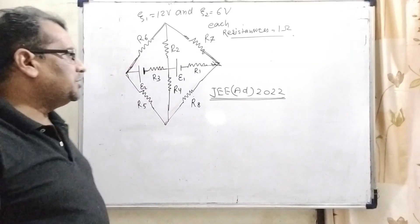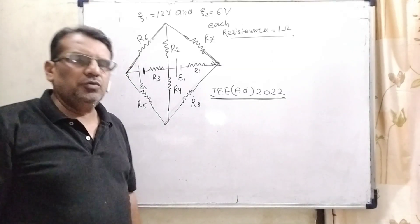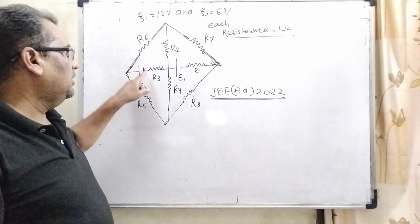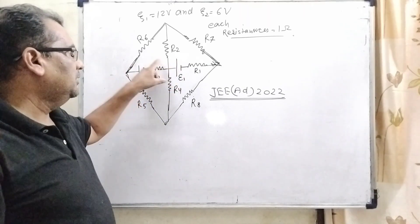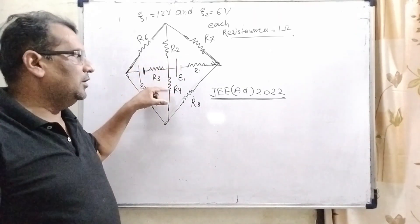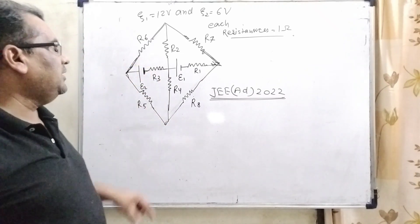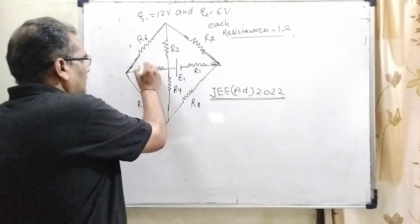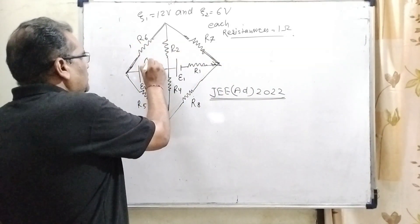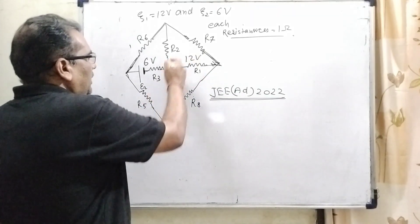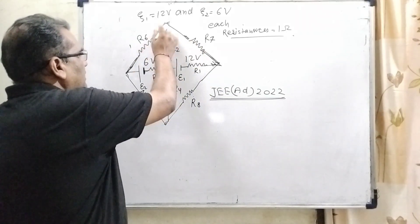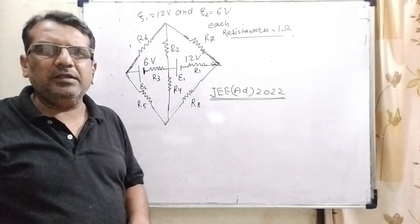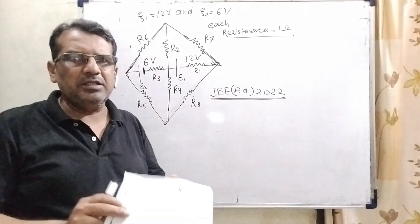Dear students, this question is asked in JEE Advanced 2022. This is a very interesting question. If we have to solve 4 different parts applying Kirchhoff's law, that is too difficult. Therefore, we can see that here all 8 resistances are 1 ohm, E2 is 6 volts battery and here 12 volts battery. You can see that here the upper part and lower part are symmetrical. Then we can apply the concept of folding.